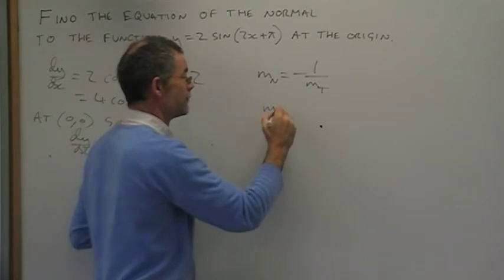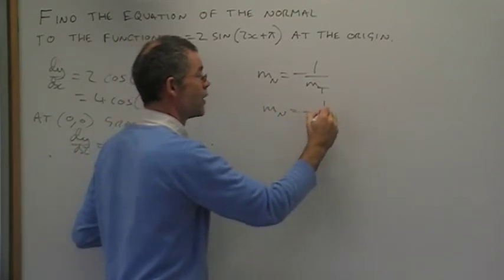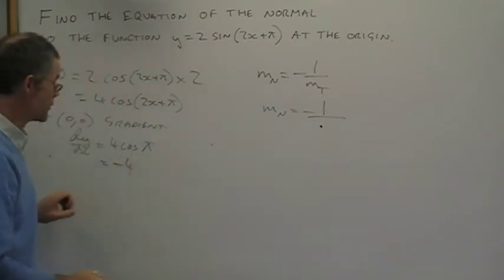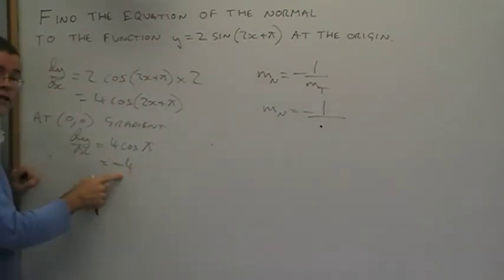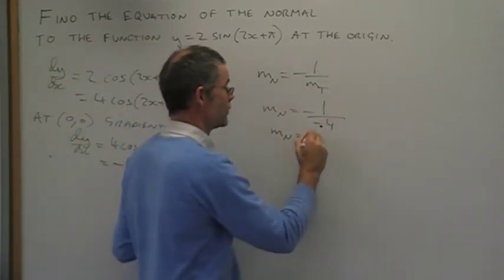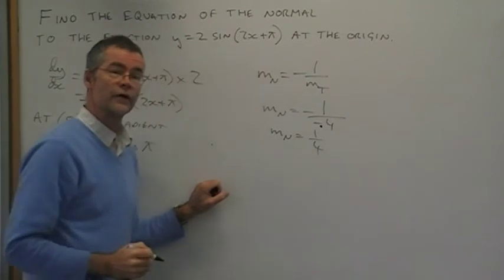The gradient of our normal m equals negative 1 over whatever the gradient of the tangent is. And the gradient of the tangent is negative 4, so that's over negative 4. In other words, the gradient of the normal is positive 1 quarter.